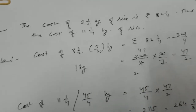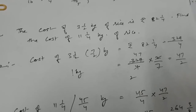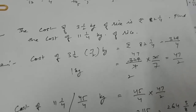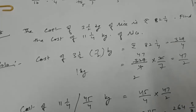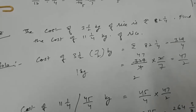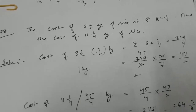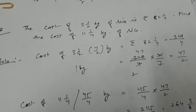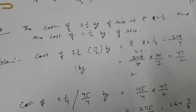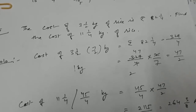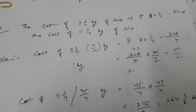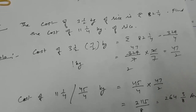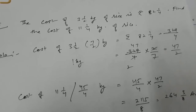In question number 8, the cost of 3 whole number 1 by 2 kilogram of rice is rupees 82 whole number 1 by 4. We have to find the cost of 11 whole number 1 by 4 kilogram of rice. The cost of 3 and 1 by 2, that is 7 by 2 kilogram of rice, is rupees 329 by 4.